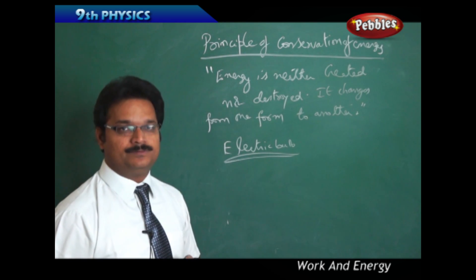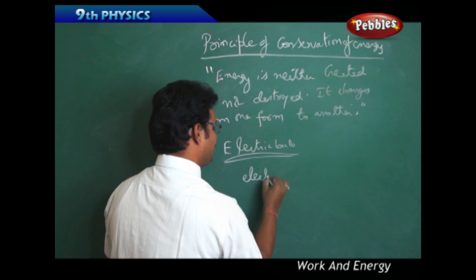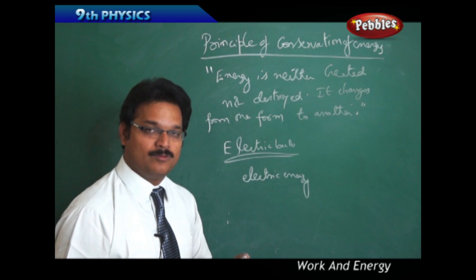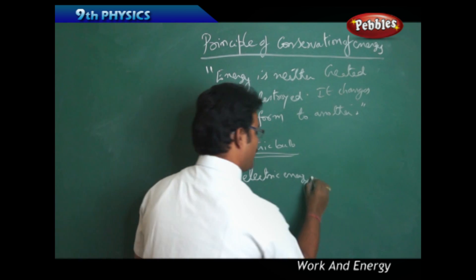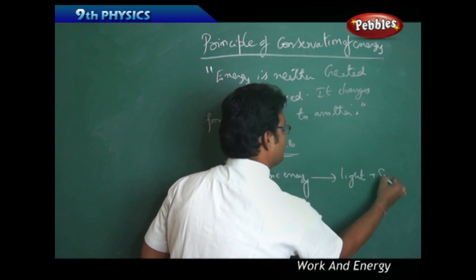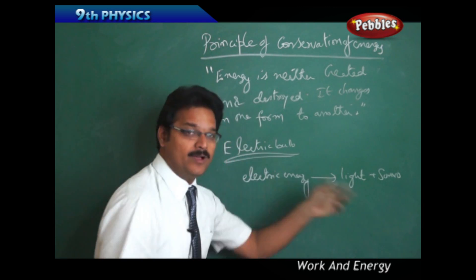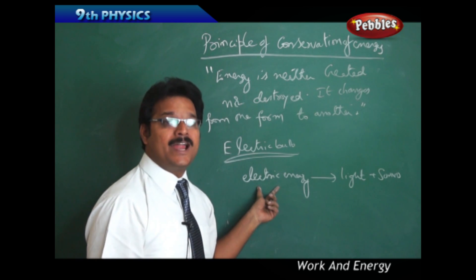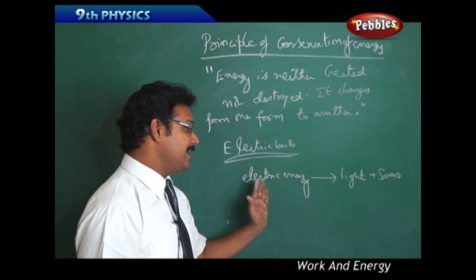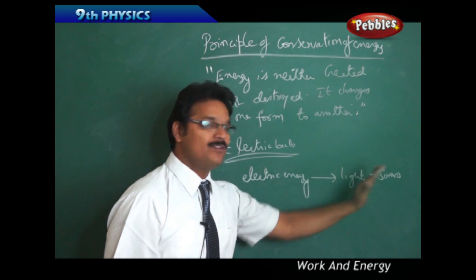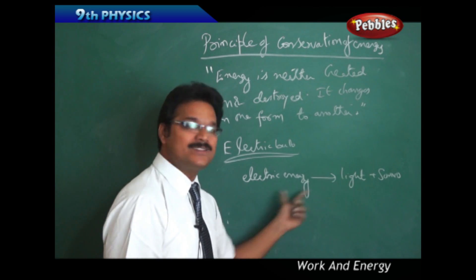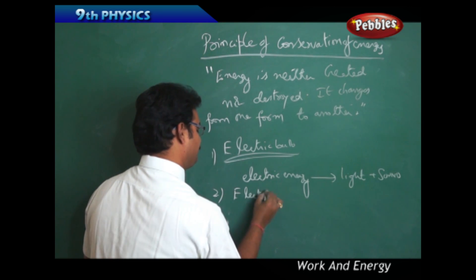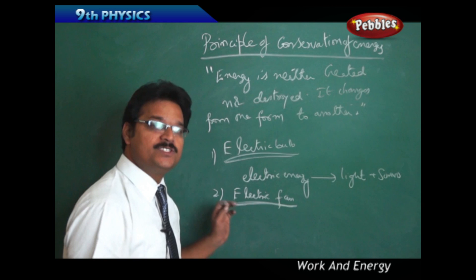How does an electric bulb work? As you know, an electric bulb takes electrical energy. Does it give only light? No — it gives both light and sound. So electric energy is converting into light and sound. You can't say that the electric bulb wasted electric energy — no, the electric energy is converted into the form of light and sound. In this way, energy remains constant.